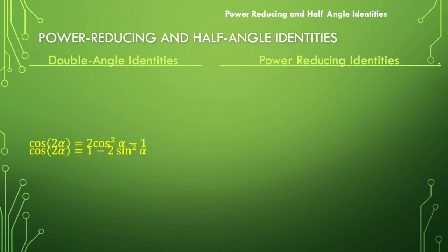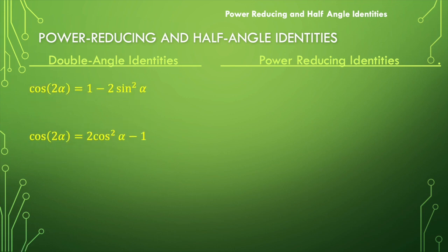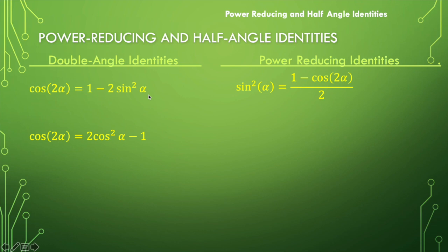We're going to use those to actually solve for sine squared and cosine squared of alpha. If we look at this first one and solve for sine squared of alpha, we would have to subtract 1 and divide by negative 2. When you divide by that negative 2 the signs change, so we end up with: sine squared of alpha equals 1 minus cosine of 2 alpha, all divided by 2.